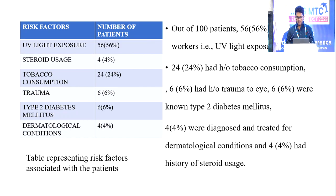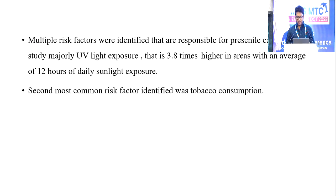6% had a history of trauma. 6% were known diabetics. 4% were diagnosed and treated for various dermatological conditions, with 4% having steroid usage. Multiple risk factors were identified, with UV light exposure being 3 to 4 times higher in areas with an average of 12 hours of daily sunlight exposure. Tobacco consumption was the second most common risk factor identified.